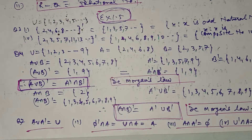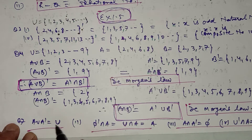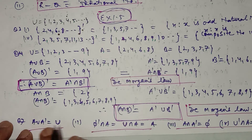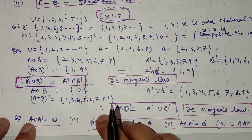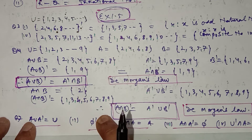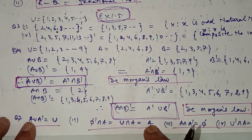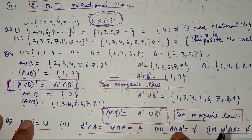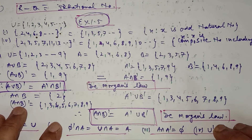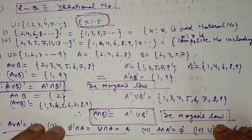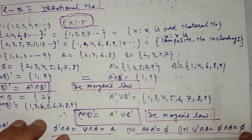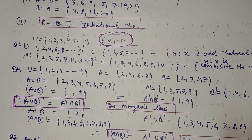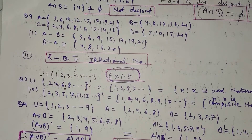In question number 7, we have to fill in the blanks. A∪A' is equal to the universal set — if we find the total elements of A and those not in A, together they equal the universal set. A'∩A = universal set, and U∩A = A. Now A∩A' means elements in A and elements not in A, so there is no common element — it will be the empty set. U' = empty set, and empty set ∩ A = empty set.